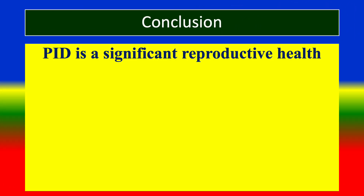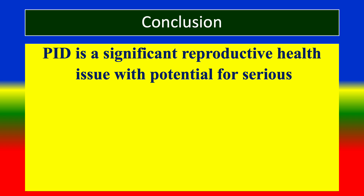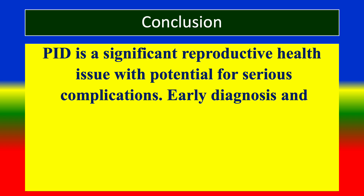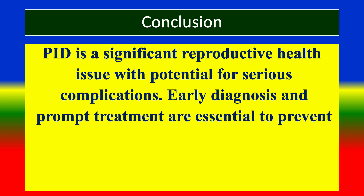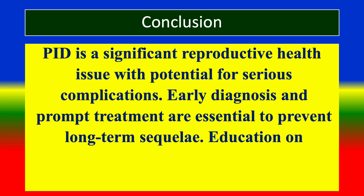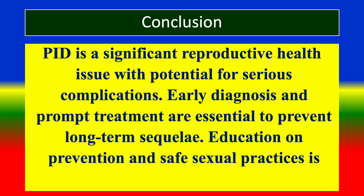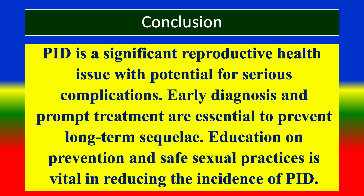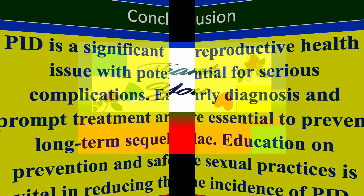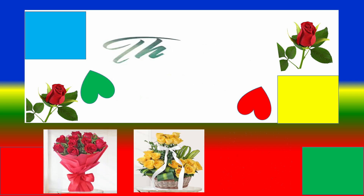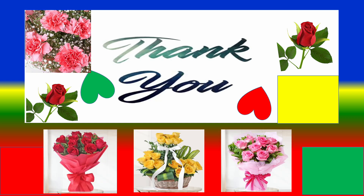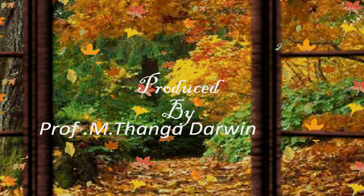In conclusion, PID is a significant reproductive health issue with potential for serious complications. Early diagnosis and prompt treatment are essential to prevent long-term sequelae. Education on prevention and safe sexual practices is vital in reducing the incidence of PID. Thank you, and have a nice day.